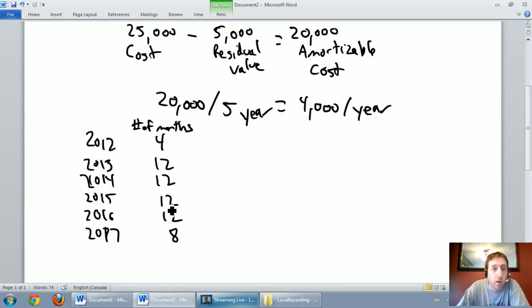In 2012 we're going to own this asset for four months and we've said the amortization rate is $4,000 a year. Let's calculate our amortization under straight line for 2012. The math is very easy: it would be $4,000 a year but we're not dealing with a full year, we're dealing with four twelfths of a year. So $4,000 times four twelfths. I'm just going to quickly calculate this on my iPhone: $4,000 times four divided by twelve...